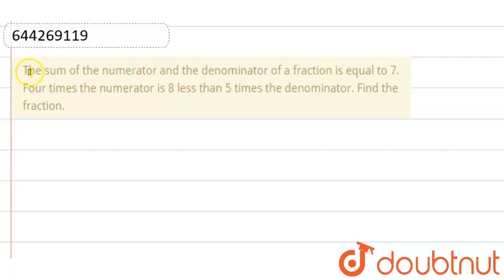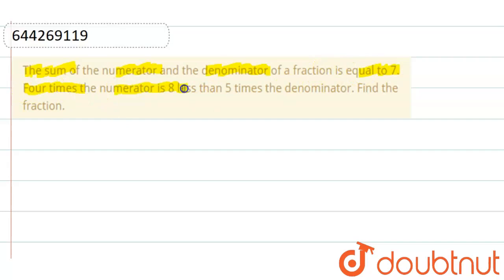Hello friends, the question is: the sum of the numerator and the denominator of a fraction is equal to 7. Four times the numerator is 8 less than 5 times the denominator. Find the fraction.